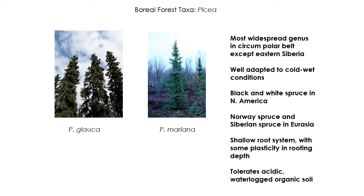We do have a fair number of interesting genera. The first genus we're going to talk about is Picea — that's spruce. Several species of spruce exist in both the Old World and New World boreal forest. It's the most common and widespread tree genus in the boreal forest. They're abundant pretty much everywhere except eastern Siberia, where it's really dry. They're adapted to very cold, wet conditions, especially where you have permafrost and don't have good drainage in the soil.